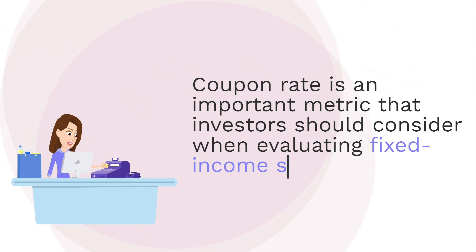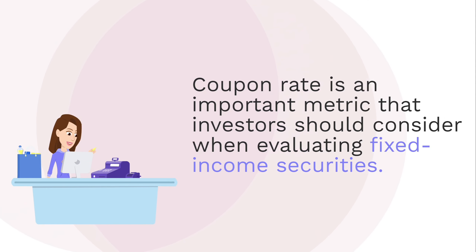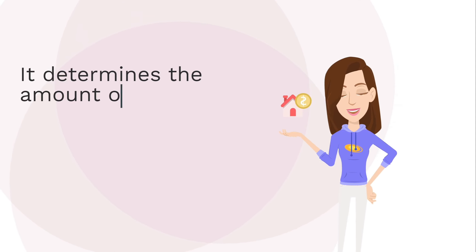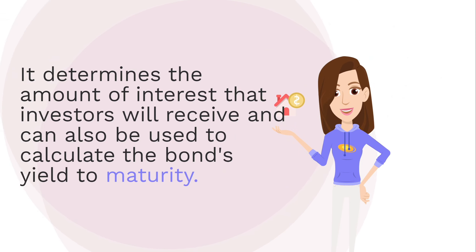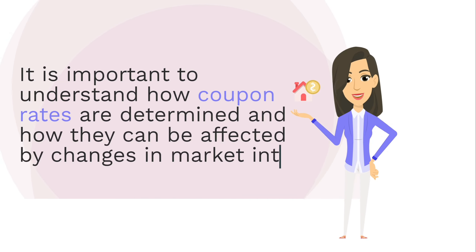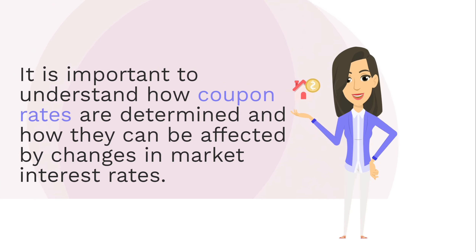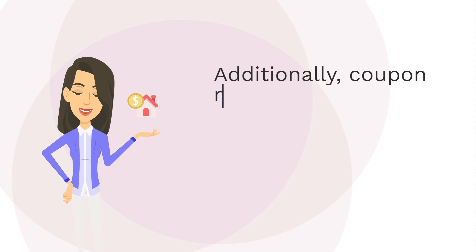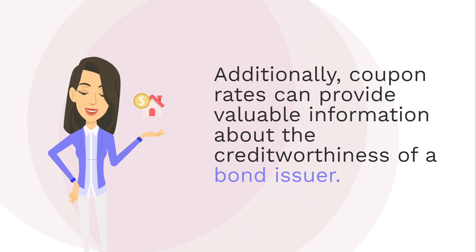Coupon rate is an important metric that investors should consider when evaluating fixed income securities. It determines the amount of interest that investors will receive and can also be used to calculate the bond's yield to maturity. It is important to understand how coupon rates are determined and how they can be affected by changes in market interest rates. Additionally, coupon rates can provide valuable information about the creditworthiness of a bond issuer.